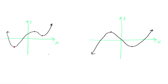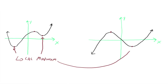Extrema is the plural term. This point down here is called a local minimum — where the graph changes from decreasing to increasing, we have a local minimum. This one right here is also a local minimum, as well as that one right there.